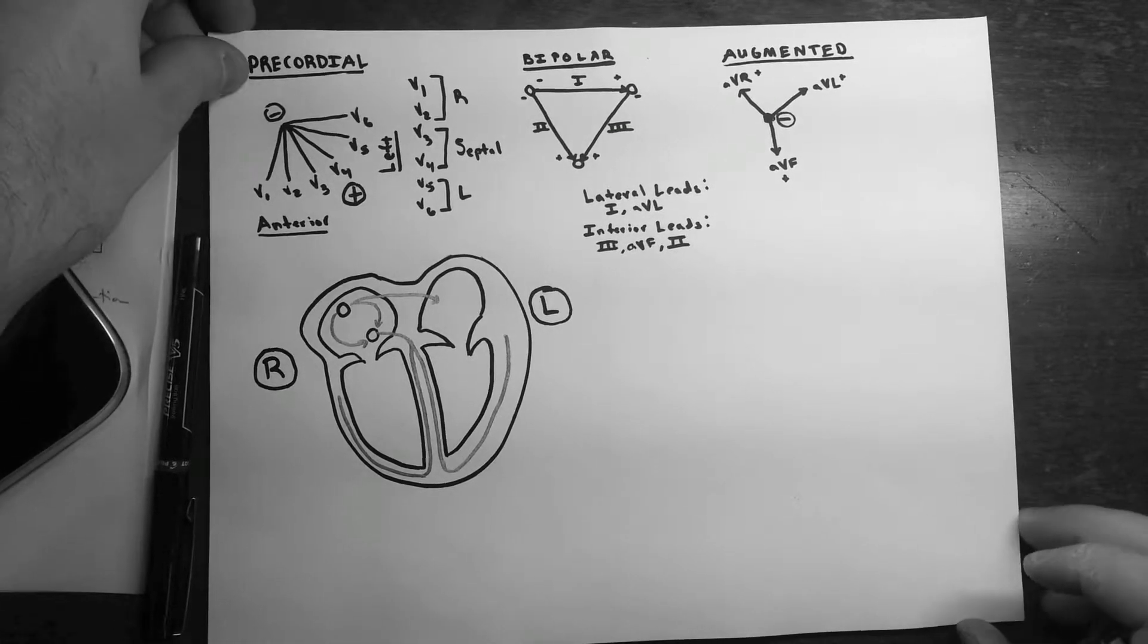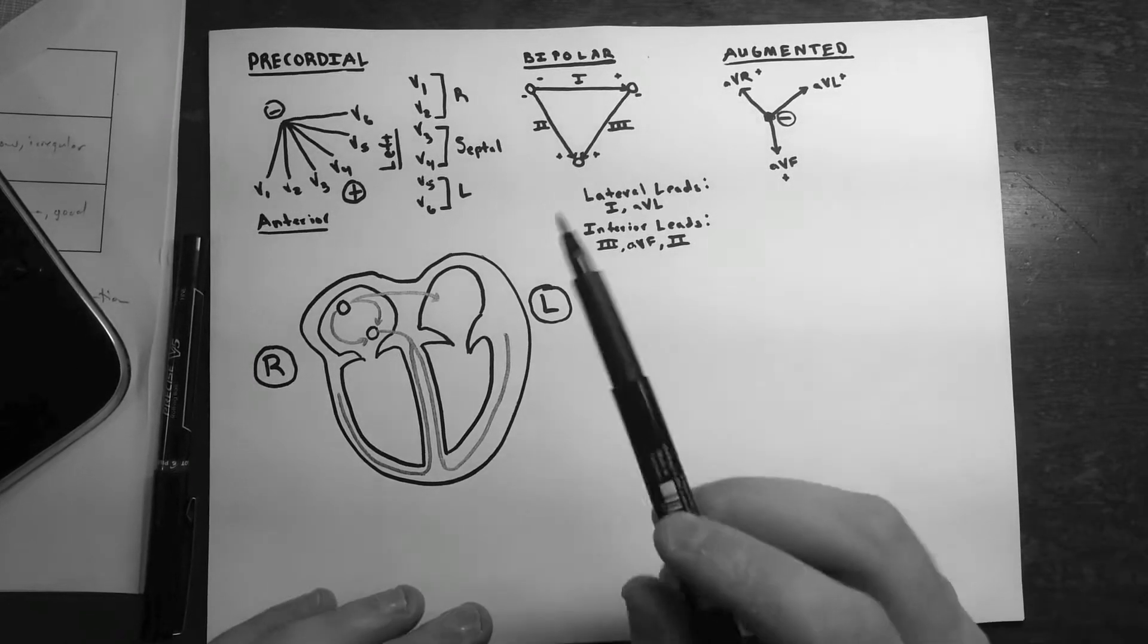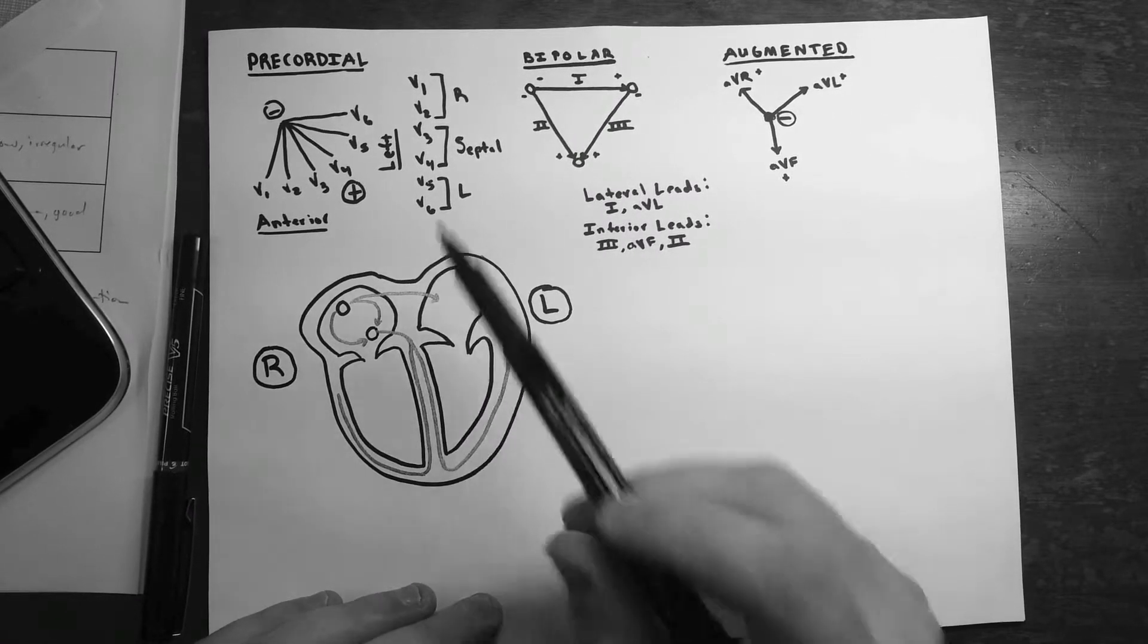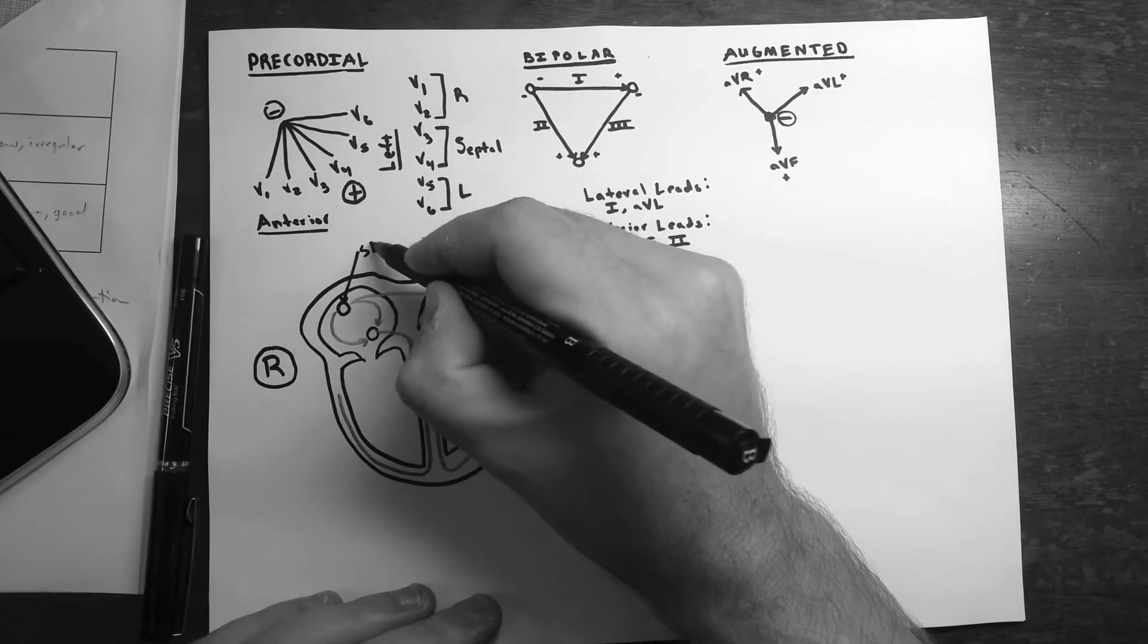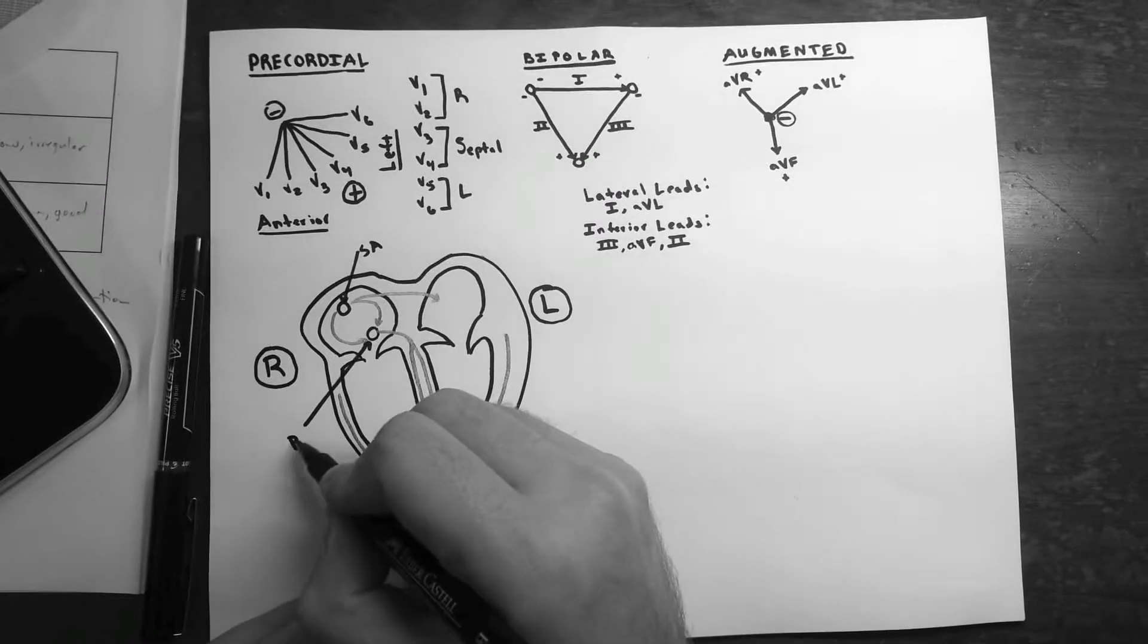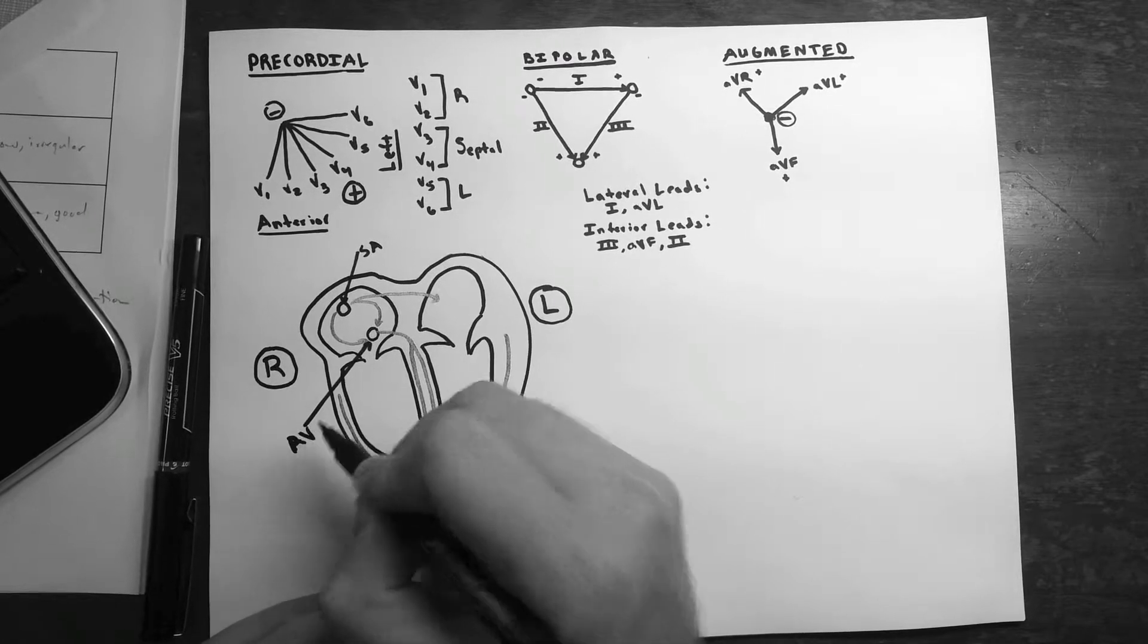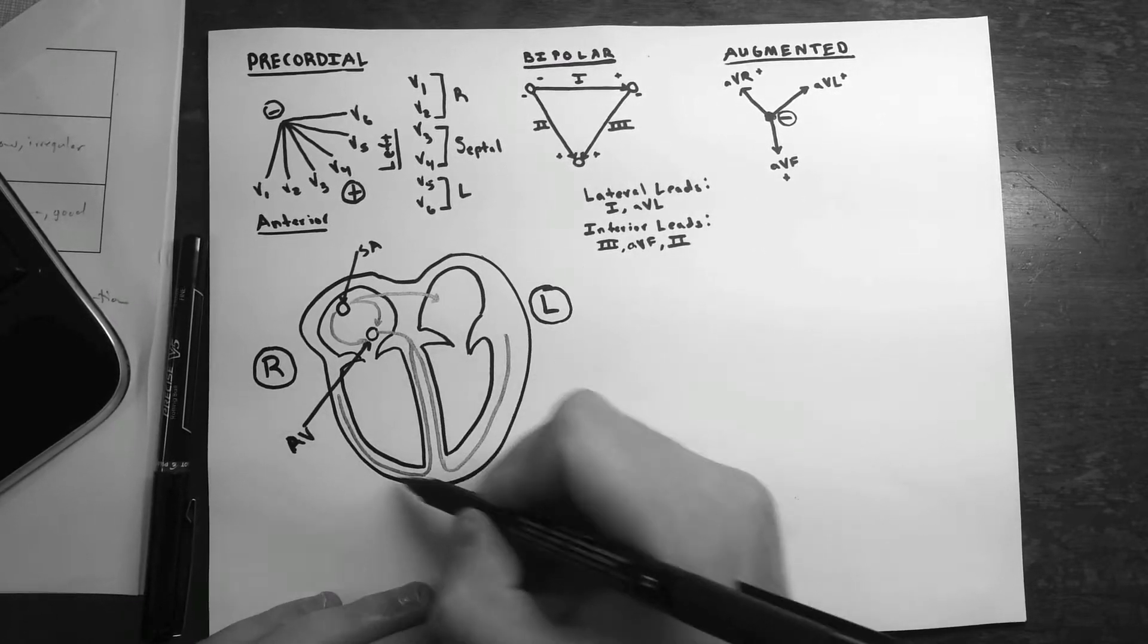So now we're going to talk a little bit about the EKG leads. And I've already kind of drawn this up a bit just to have a starting point so we don't have to draw so much. So this is a cross-section of a heart. This will be your right ventricle, and this is your left ventricle. Here's your SA node. And this is just for future reference because I'm going to use this chart a fair amount. Sorry, this is an AV node. That's your AV node. Bundle of Hiss and Purkinje system here.